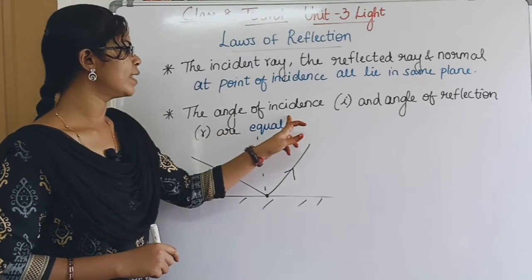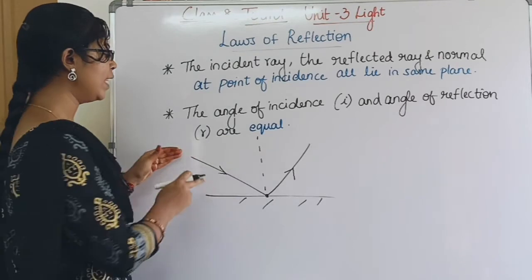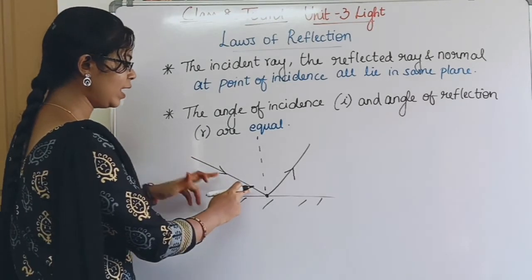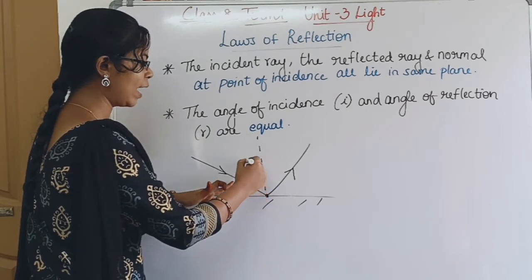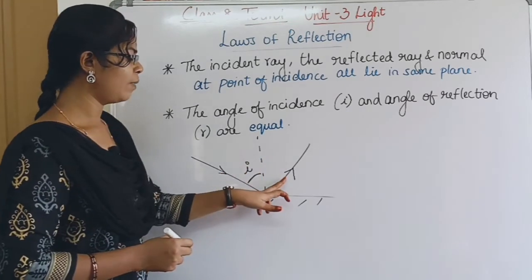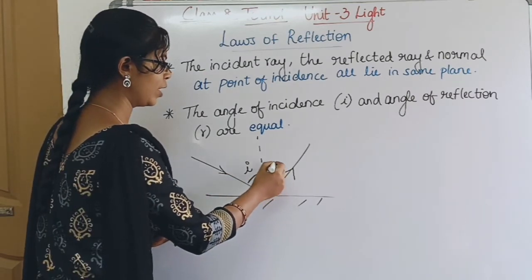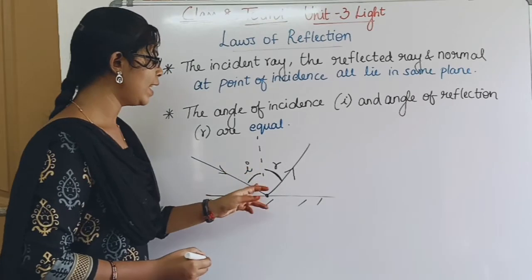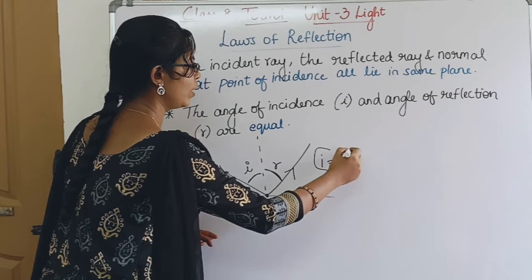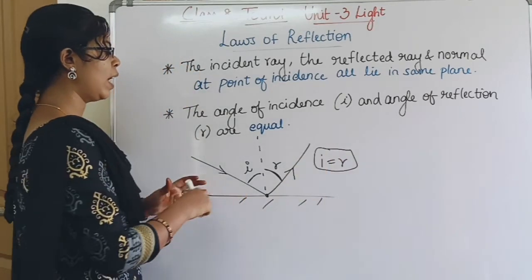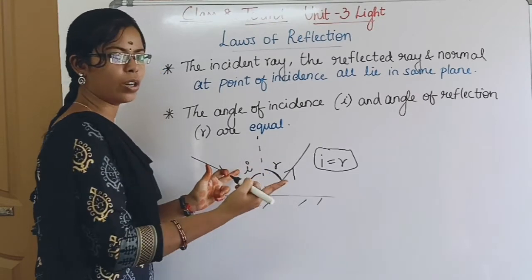The second law: the angle of incidence (I) and the angle of reflection (R) are equal. The angle between the incident ray and the normal is the angle of incidence, and the angle between the reflected ray and the normal is the angle of reflection. So I is equal to R. Here it is 45 degrees and here it is 45 degrees — I equals R.